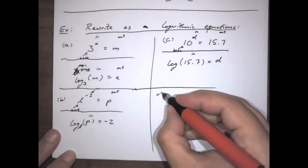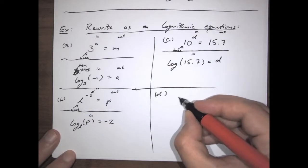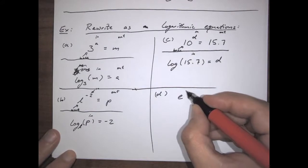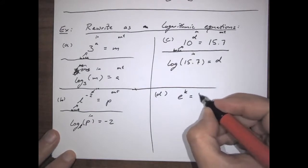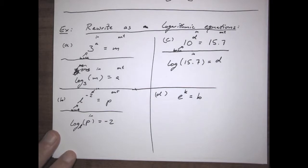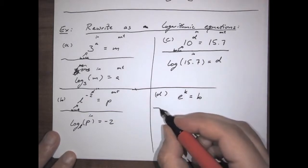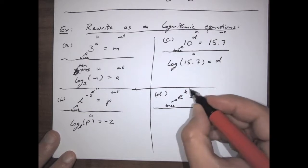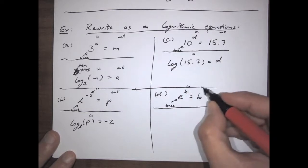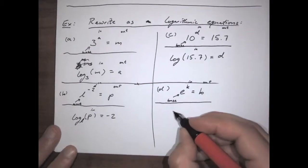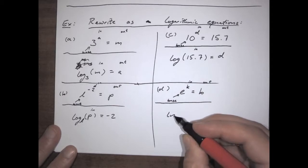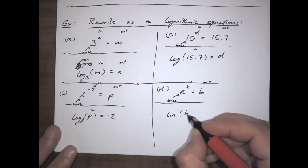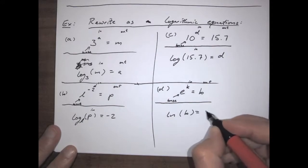And lastly, the equation e to the k equals b. The base is e, the input is k, the output is b. When we turn the tables, that means it's going to be a natural log — log base e. The input is going to be b and the output is going to be k.